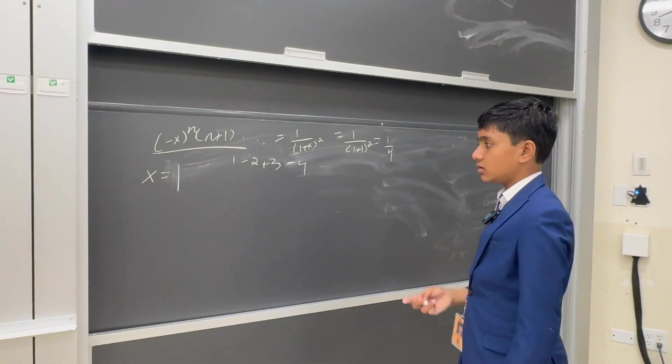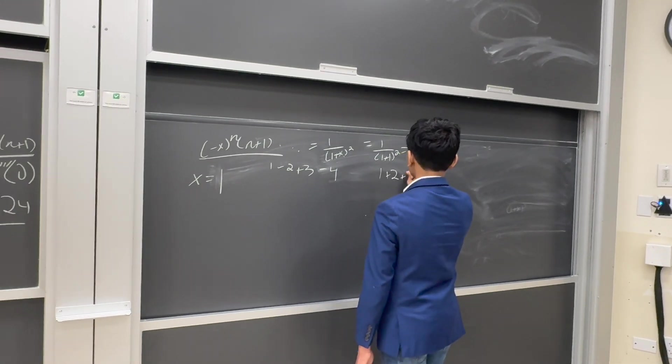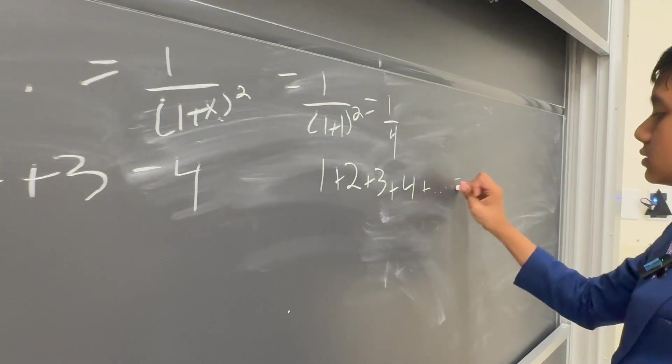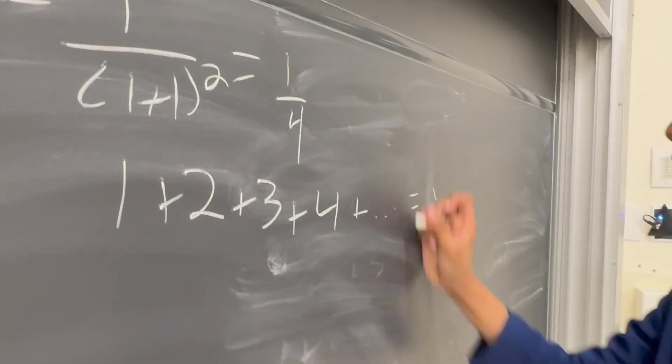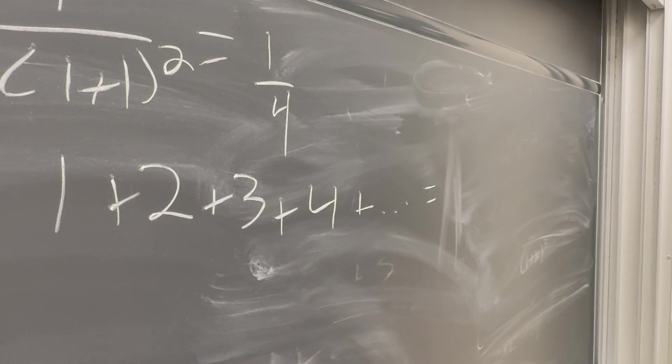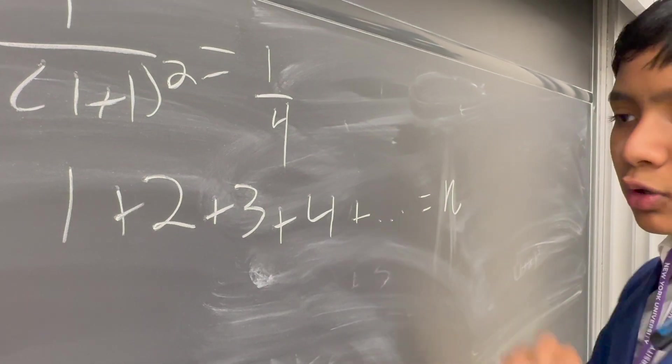So then, this can be extended to some other sums, the most famous of which, the Ramanujan sum, which Ramanujan himself summed more rigorously. But we can get a heuristic sense for how he did it with this summation. So let's say it's equal to some number n.